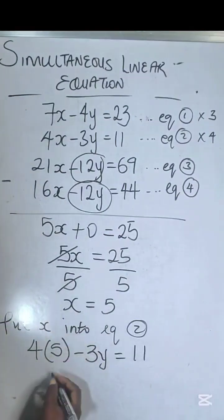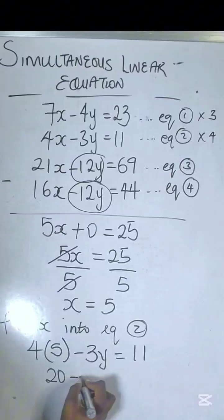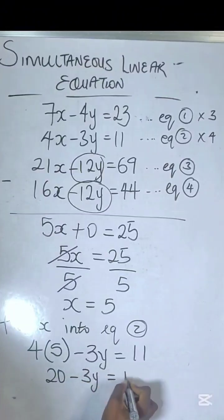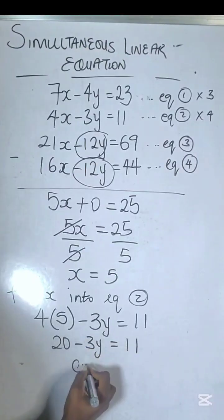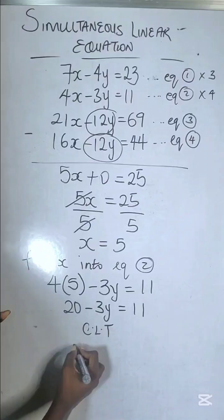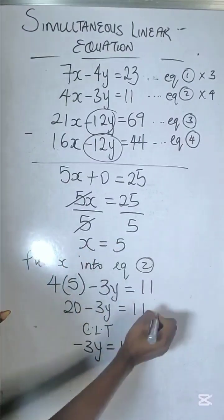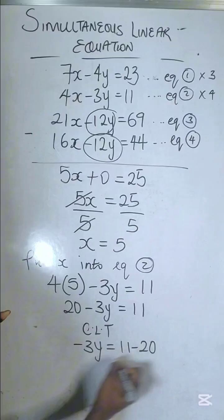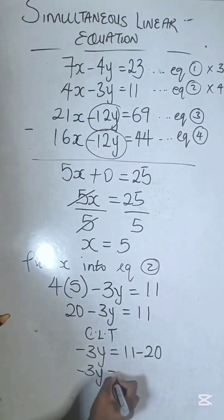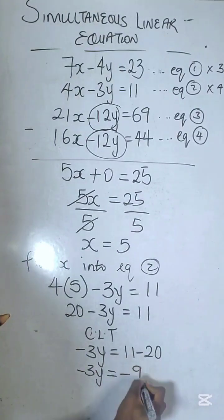So 5 times 4, or 4 times 5, is 20. 20 minus 3y equals 11. You have to collect like terms, so -3y equals 11, and 20 goes to the other side to become -20. So -3y = 11 - 20 = -9.